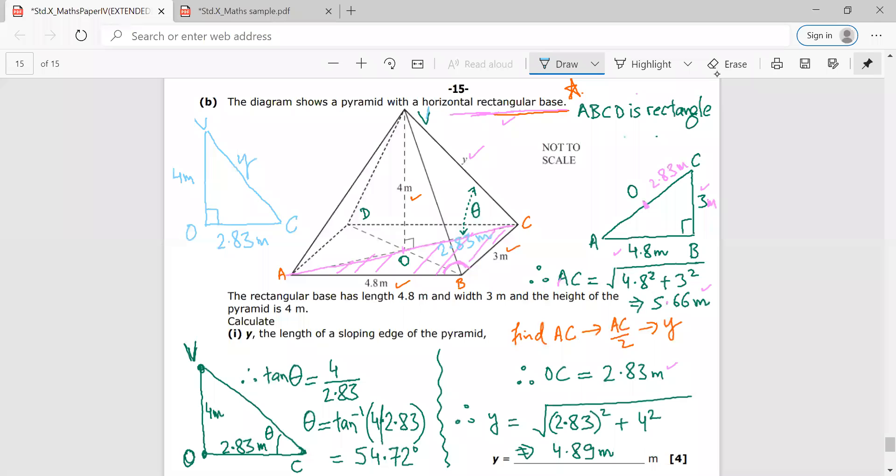So what I'll do is, so I'll make a triangle VOC. This is triangle VOC. Again, what I need to understand is that VOC, this angle would be 90 degrees as is marked in the figure. So this angle is 90 degrees. I can use Pythagoras. This is 4 meters. This is 2.83 meters. And to find Y, I need to use Pythagoras. And the answer would be 4.89 meters. Any doubt?